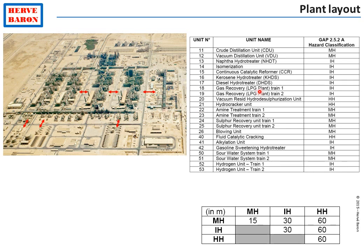Each unit is classified in terms of level of hazard. The classification depends on the type of fluids handled, the type of process — whether it is a reactive process with possible runaway — and the level of pressure and temperature. Once each unit has been classified, a separation distance is kept between each two units based on the combination of hazard levels. For instance, two high hazard units will be separated by 60 meters, whereas two moderate hazard units only require 15 meters.